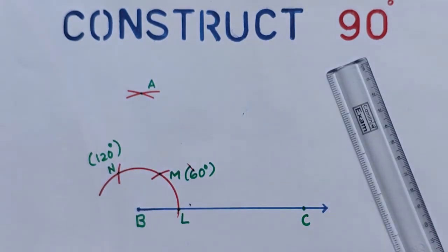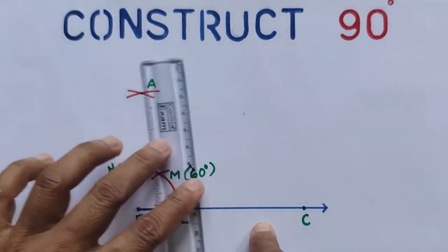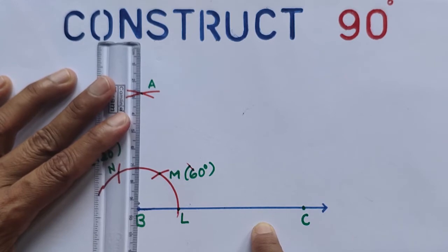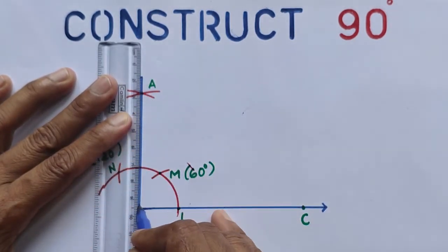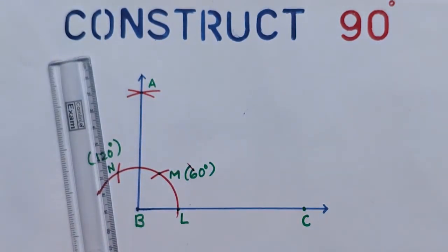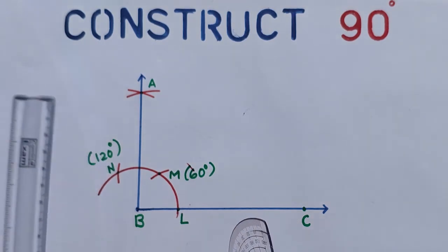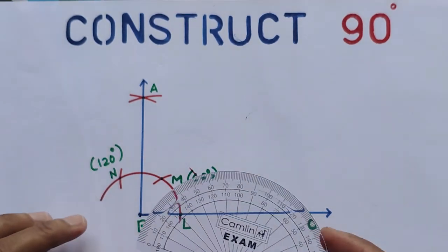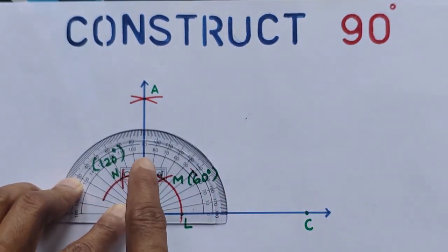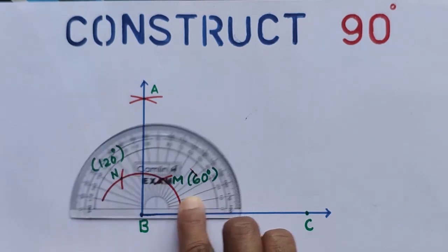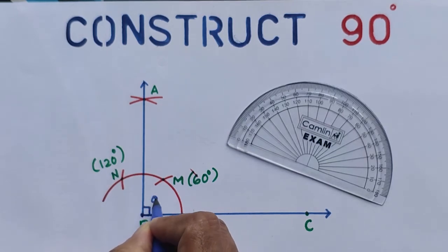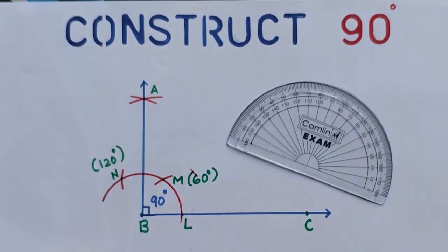Join A and B. We will get 90 degrees. Let's check with protractor. See, from this you can understand angle ABC equals 90 degrees. So this measure is 90 degrees.